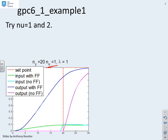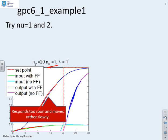When I've done nu equals 1, what do you notice? With advanced knowledge, the input starts moving very early, 20 samples before the target actually changes. As a consequence, the output starts moving early. You can compare that to the performance without advanced knowledge, and you'll see very different behavior. But here's the key thing: I would argue this output is responding rather too soon and rather slowly. I really didn't want it to start responding 20 samples ahead.